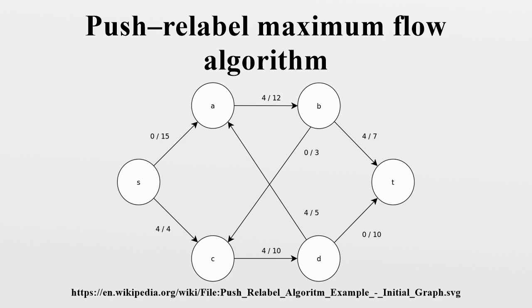Consider a flow network with a pair of distinct vertices designated as the source and the sink respectively. The relation denotes the capacity of each edge. A flow on the network is a real function satisfying the following conditions.